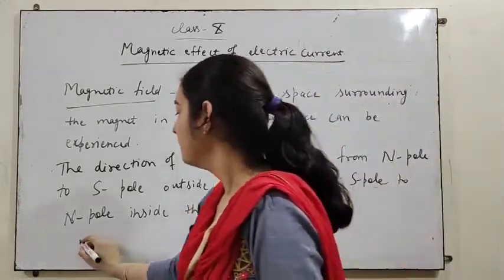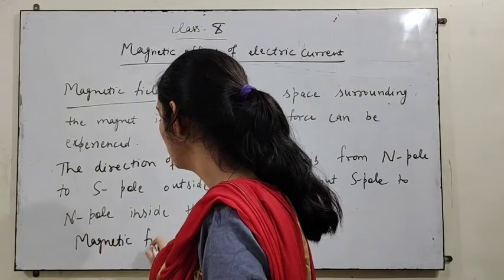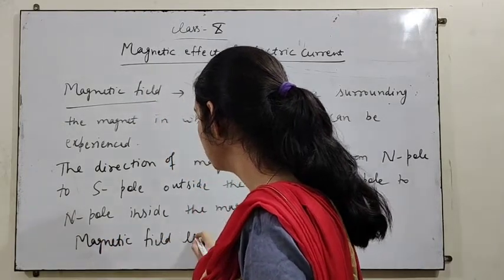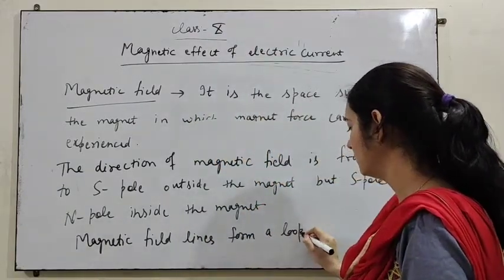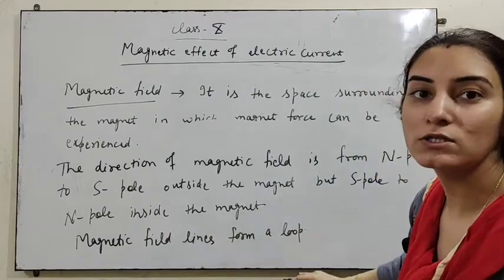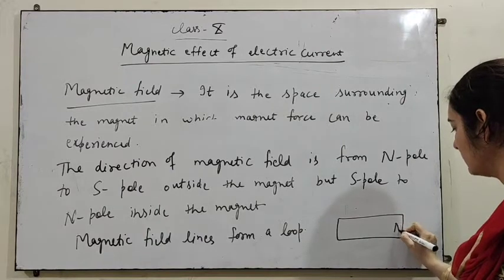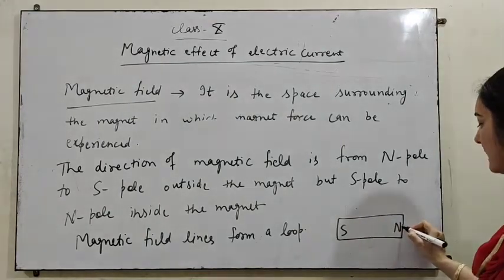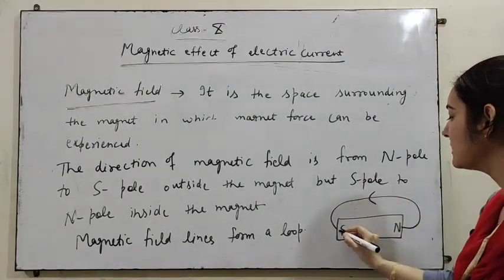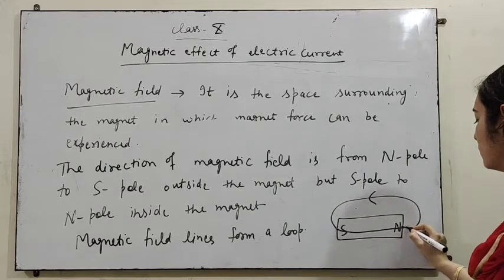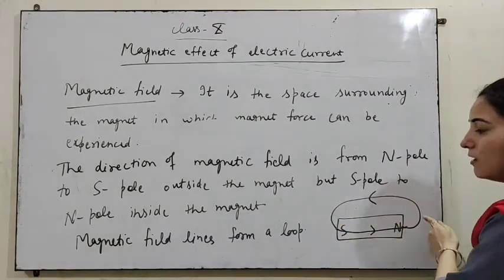So we can say that magnetic field lines form a loop — a closed path. For example, this is the North Pole, this is the South Pole. Outside the magnet, the direction of magnetic field is from North to South, but inside it is from South to North. So a closed path is formed here, which is known as a loop.